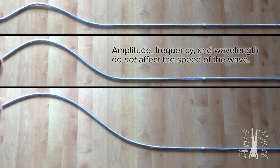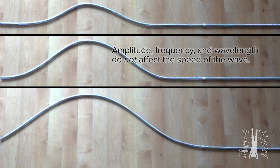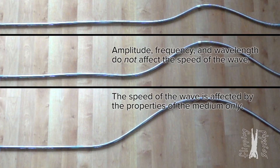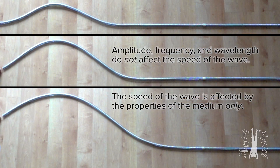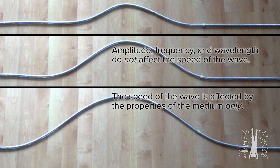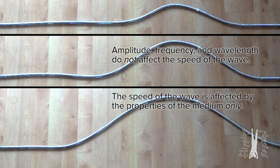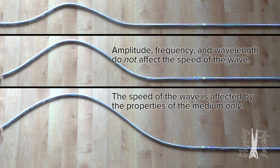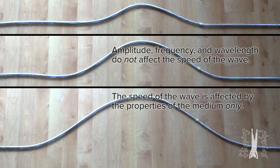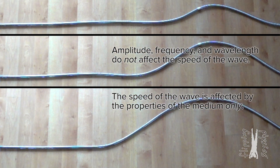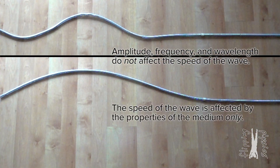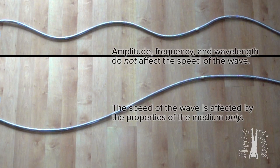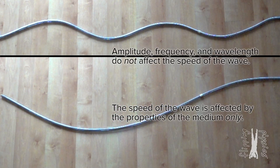I also want to point out that the amplitude, frequency, and wavelength of the wave do not affect the speed of the wave. The only thing that affects the speed of the wave in the medium is the properties of the medium itself. As you can see, these three wave pulses have the same speed even though they have different amplitudes. They have the same speed because the medium is the same — it is the same spring with the same tension. And these two periodic waves have the same speed even though they have different wavelengths and different frequencies, again because the medium is the same.